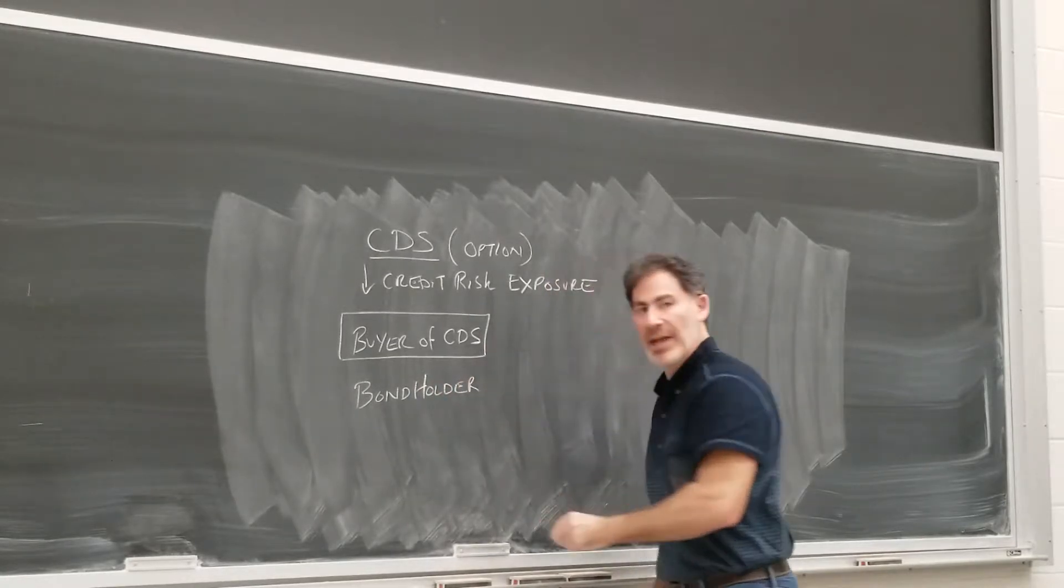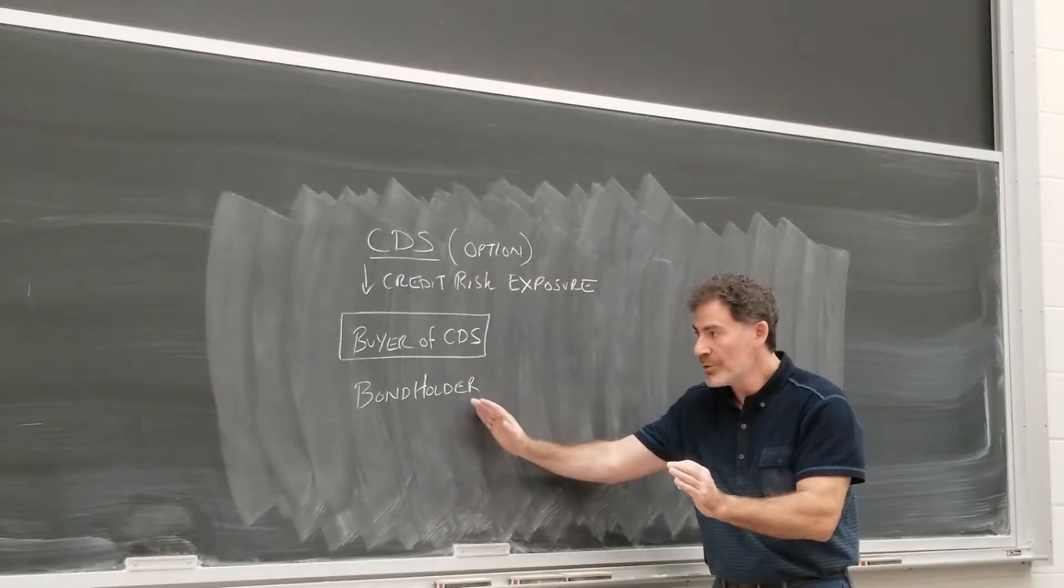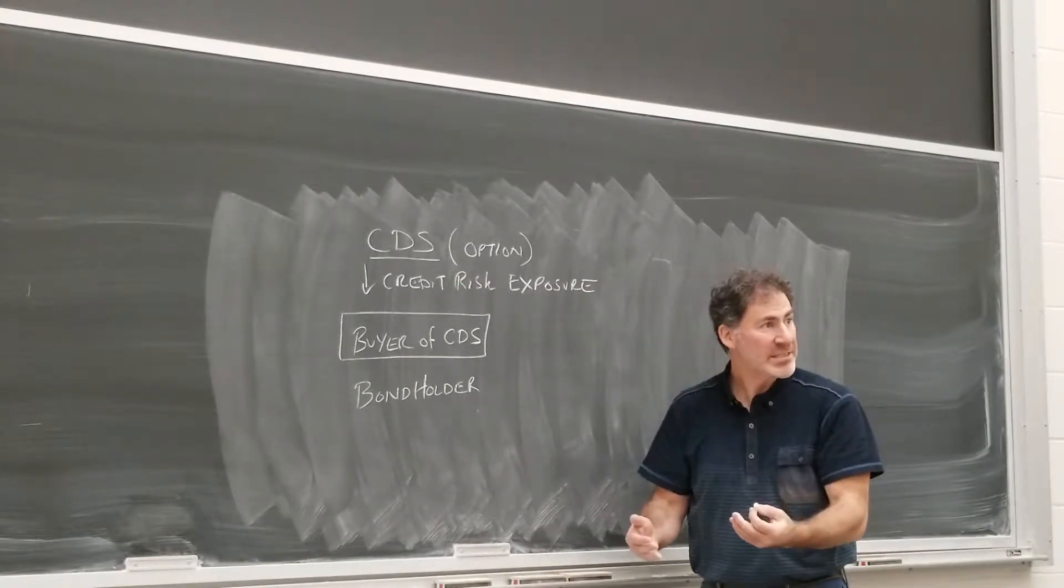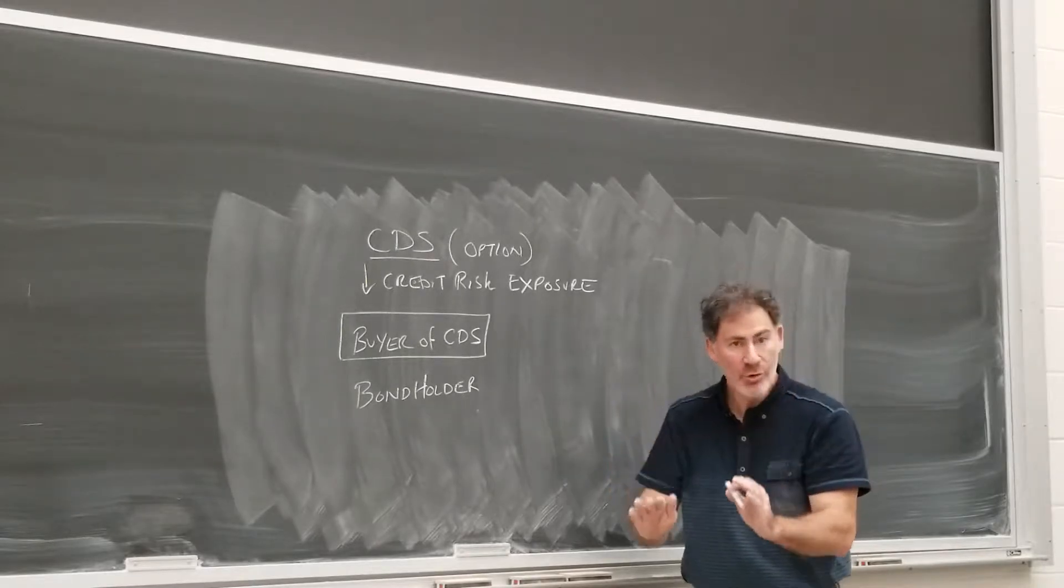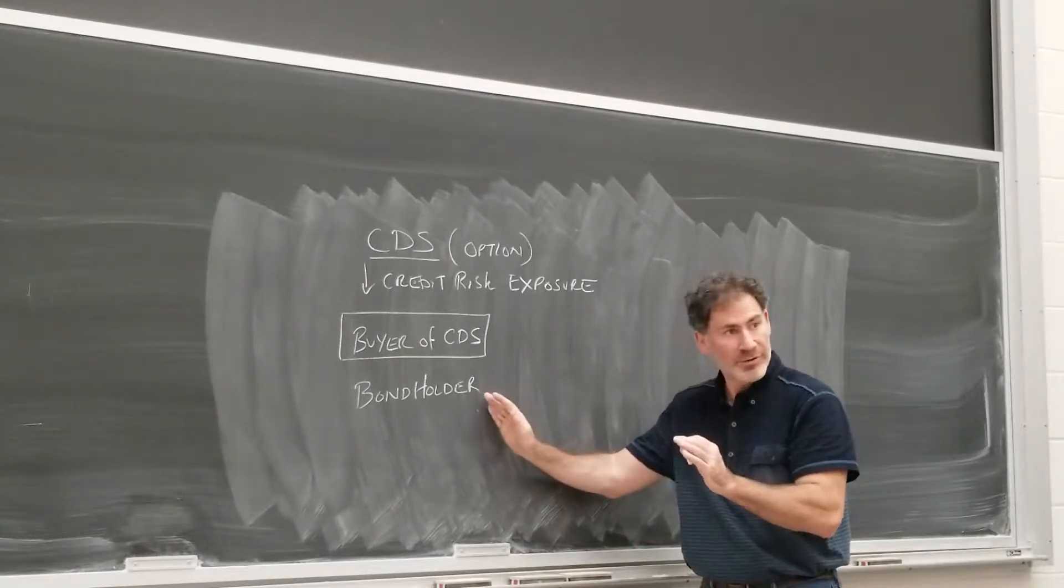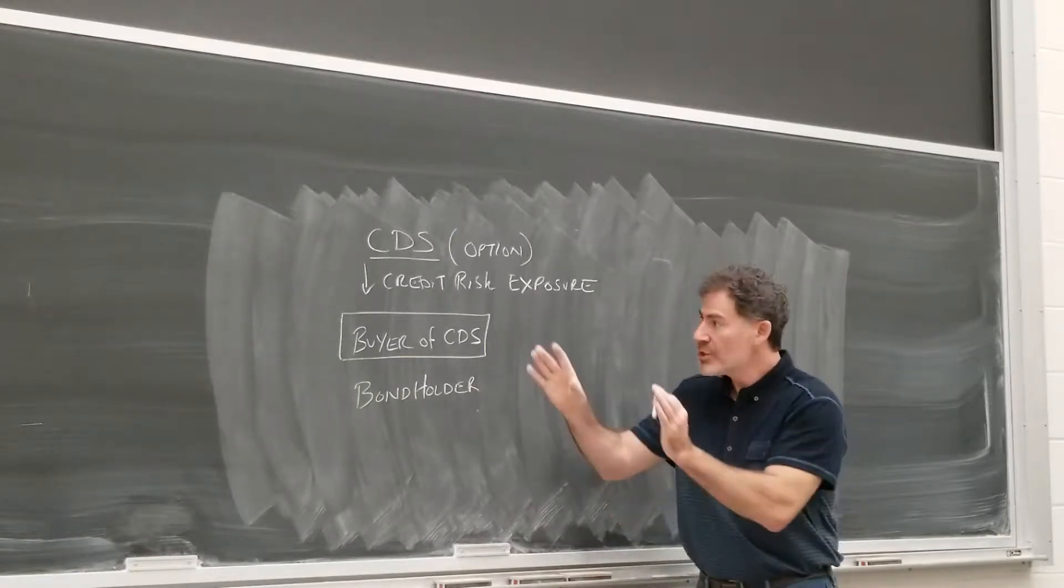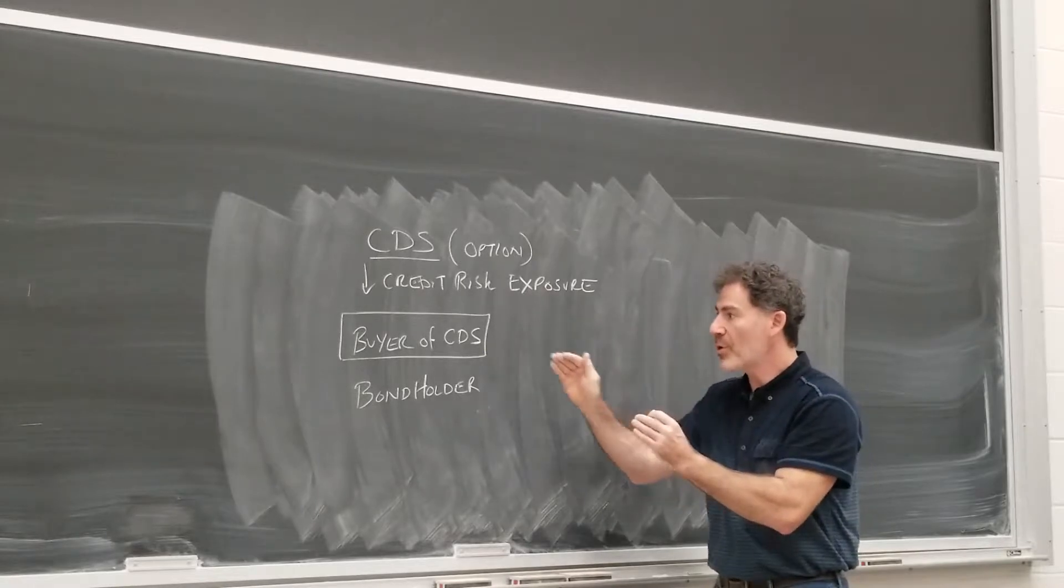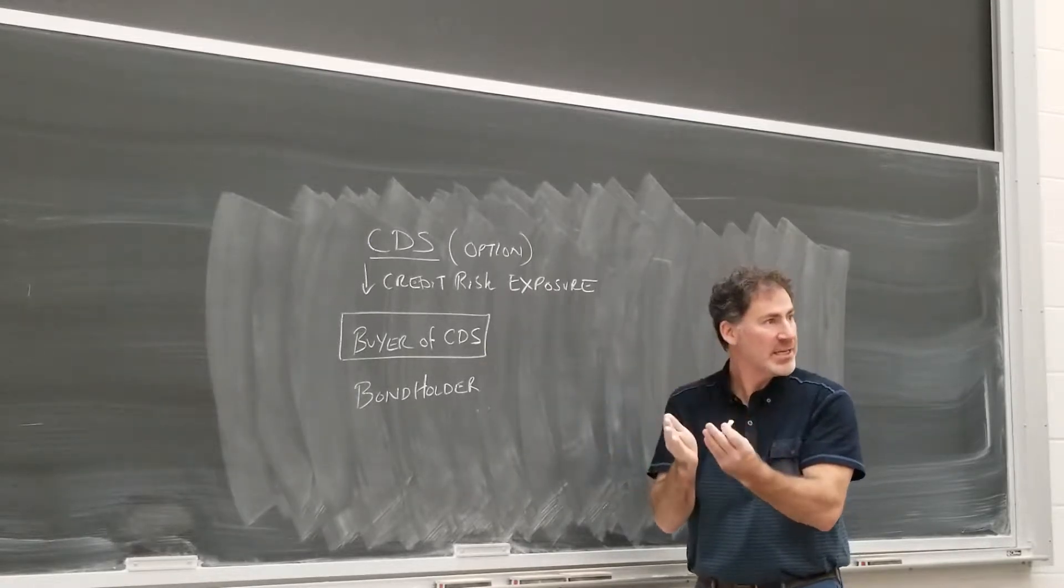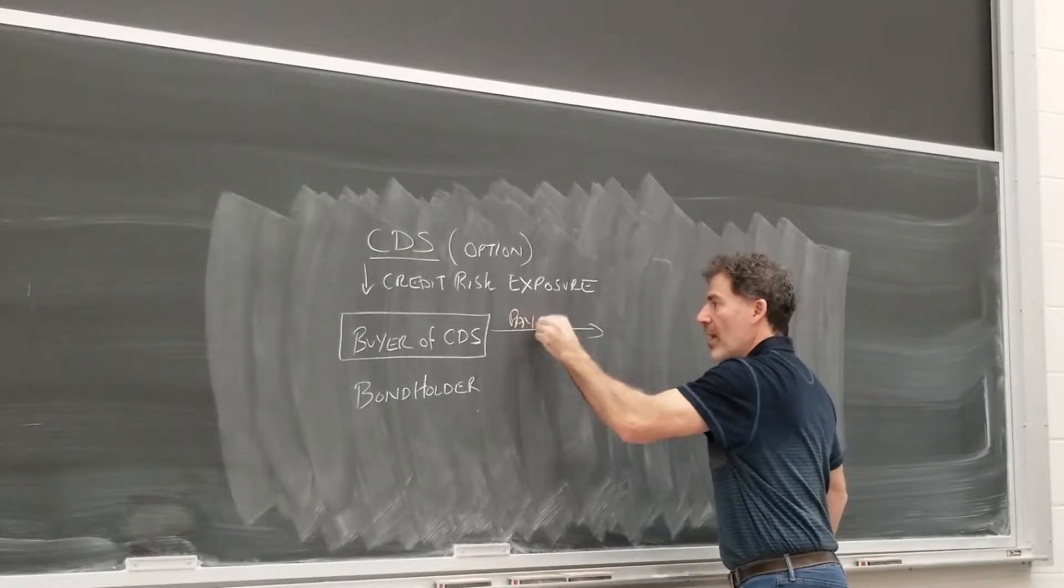I mean, it could be a speculator, but let's just say a bondholder. So the bondholder has a risk that the issuer of the bond could suffer a credit event, a default, a downgrade, some sort of restructuring. So in order to remove that credit risk exposure, we can buy a CDS. So we pay a premium.